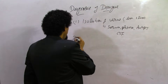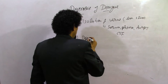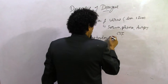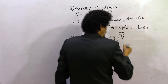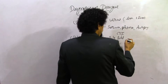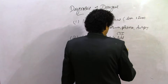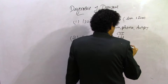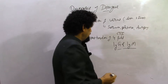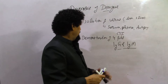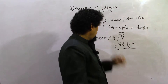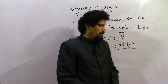Another diagnostic criterion is the demonstration of a 4-fold or greater rise in reciprocal IgG (immunoglobulin G) and IgM antibodies.